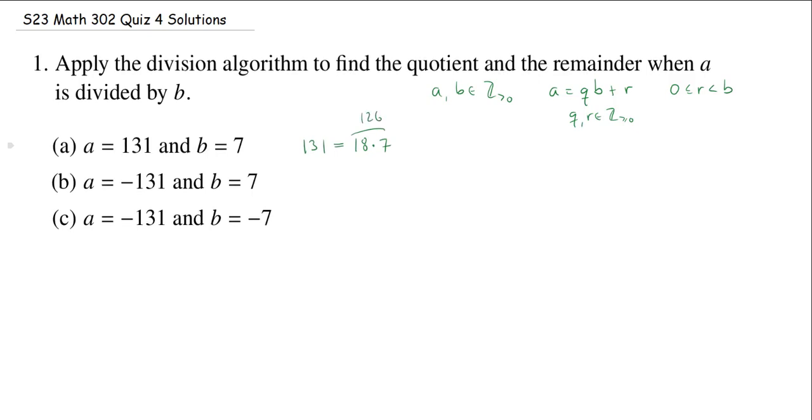Okay, so this is 126. That doesn't get me all the way to 131. That's going to leave me with 5 more. So this 18 would be my Q, and this 5 would be my R. You see, of course, R is non-negative, and it is less than 7.